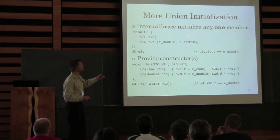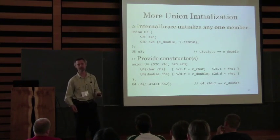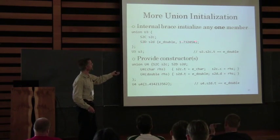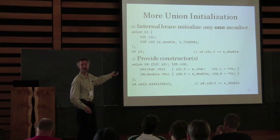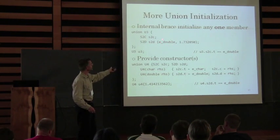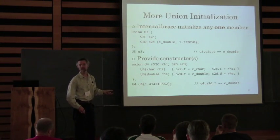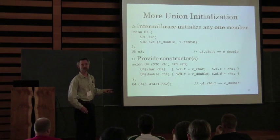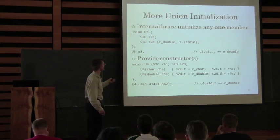Internal brace initialization is new with C++11. You can declare a struct and initialize values in place. But with a union, you can only initialize one of these things. If you try to initialize more than one member, the compiler will yell at you — which is a good thing.